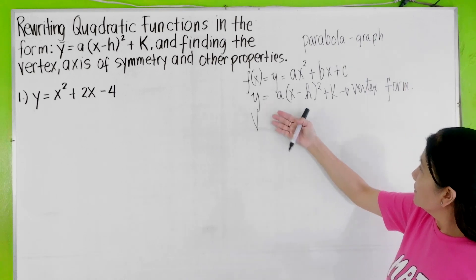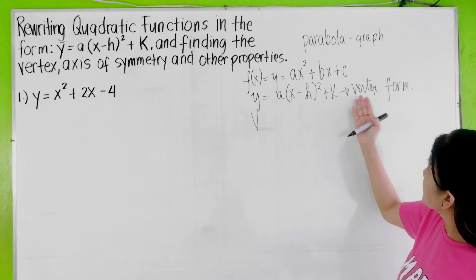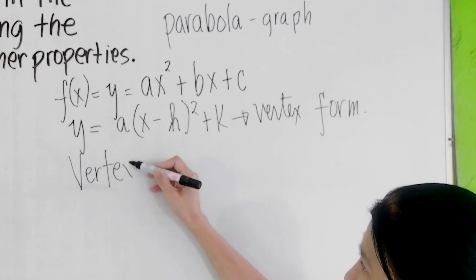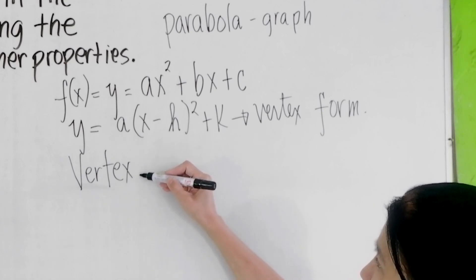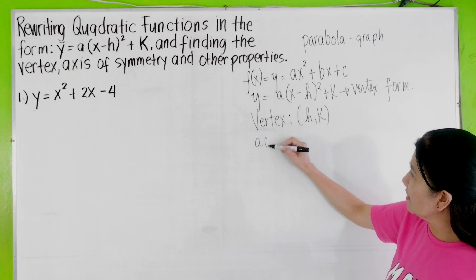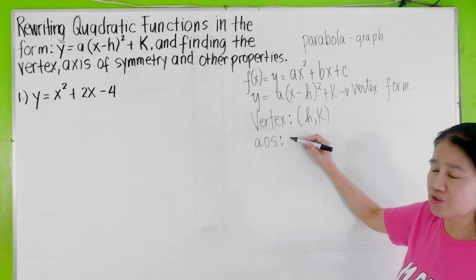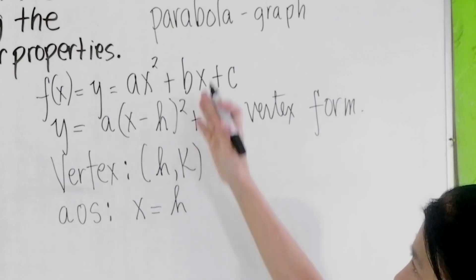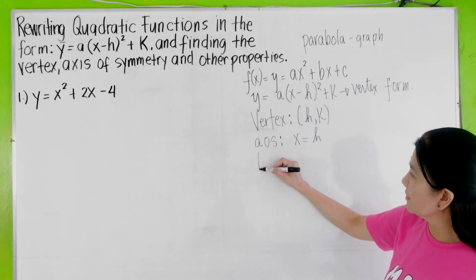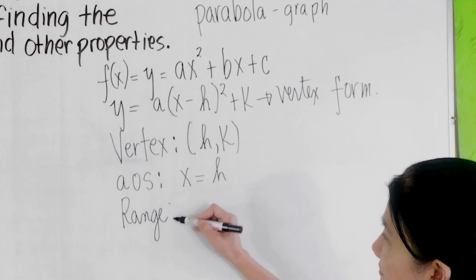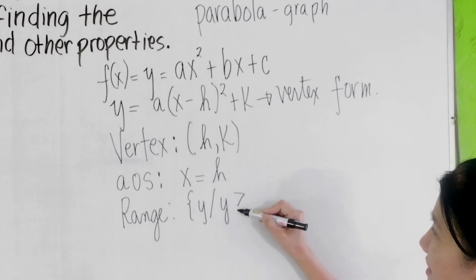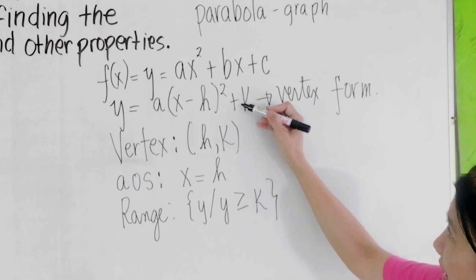Given the function in its vertex form, we can easily identify the following properties. The vertex is simply the ordered pair (h, k). The axis of symmetry, or AOS, is x equals h — the vertical line x equals h, whatever h is. The range will be the set of all y's such that y is greater than or equal to k, the k value of the vertex.